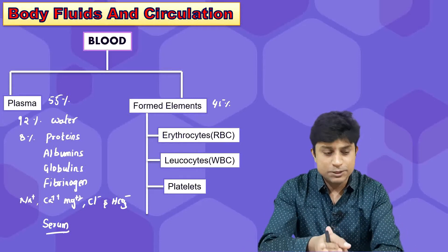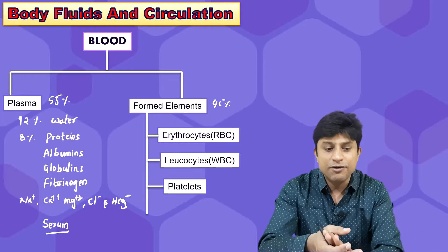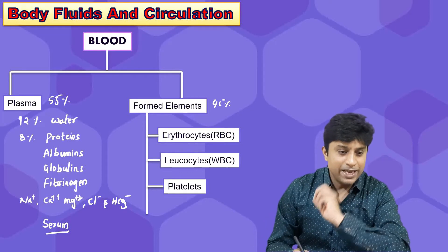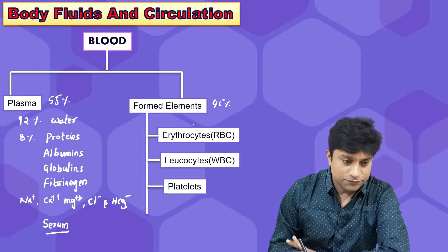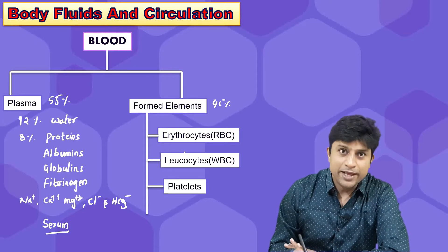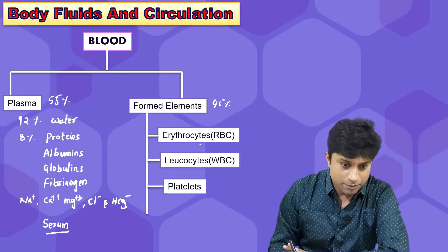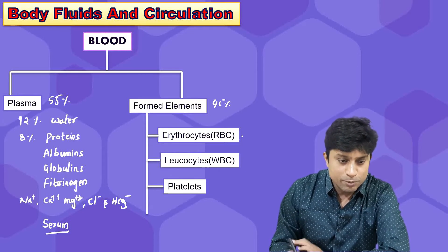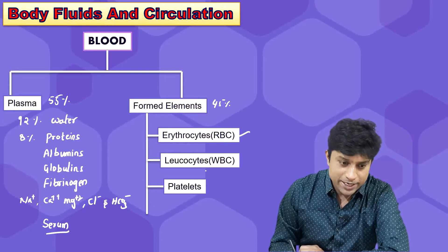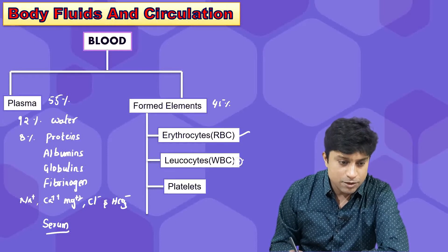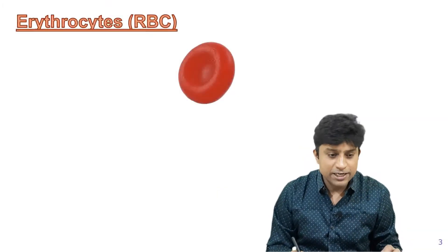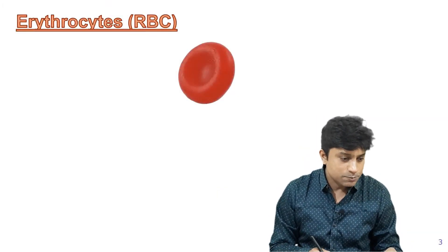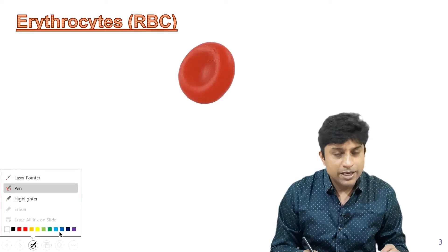Plasma proteins perform all these different functions. The formed elements are 45 percent and are of three types: erythrocytes, which we call RBC, which are the most numerous cells; leukocytes, which are called white blood cells or WBC; and platelets. First, we talk about RBC — erythrocytes.